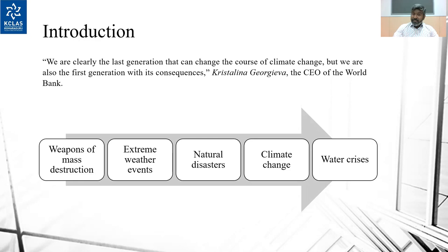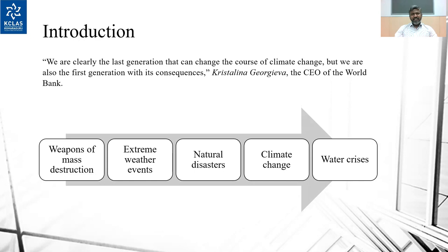The World Economic Forum tells us there are five types of risks expected in another 10 years time. They are: weapons of mass destruction, extreme weather events, natural disasters, climate change, and water crisis. Now, as an individual, as a community, as a society, or as a corporate or a business, we have a lot of roles to play in addressing this.